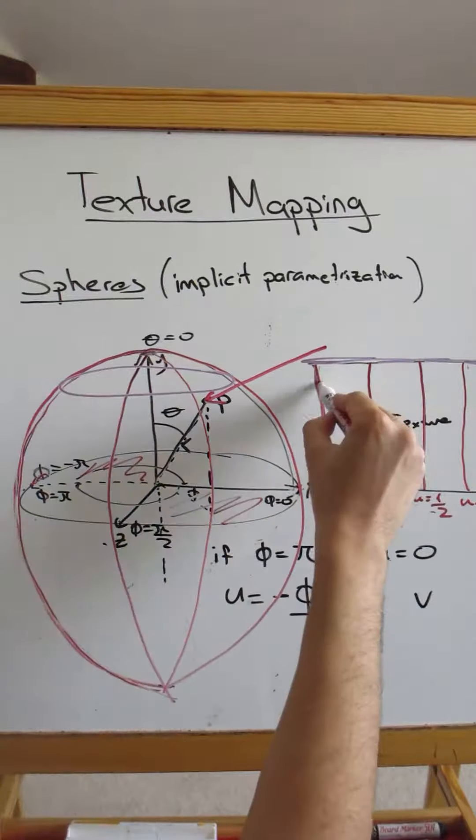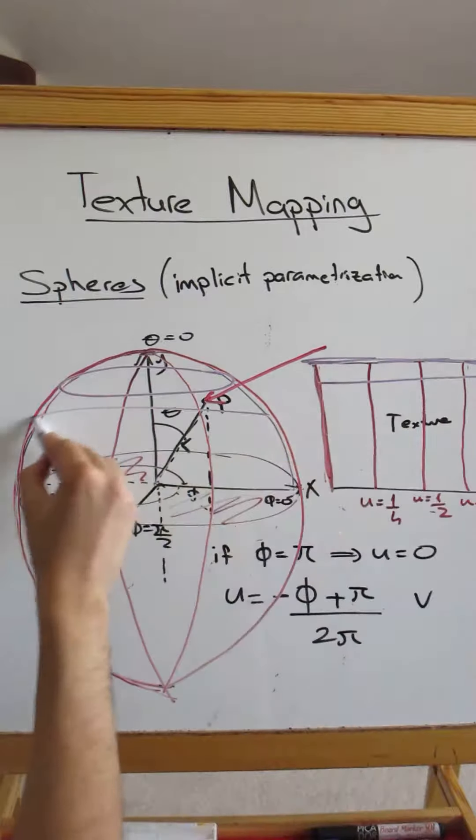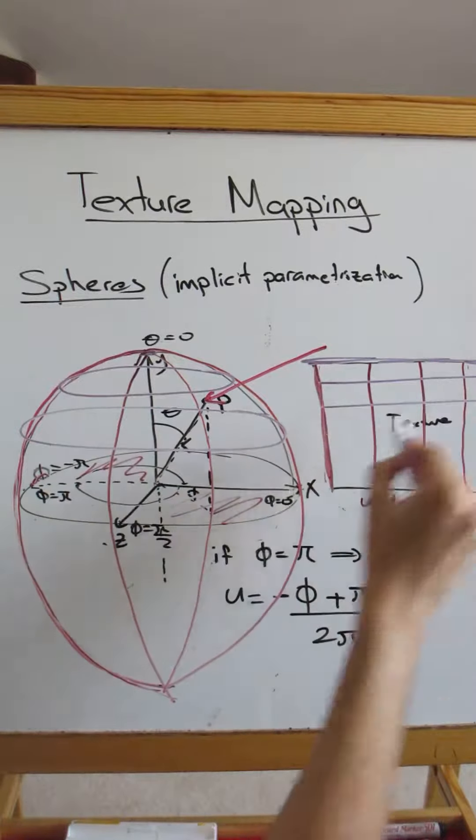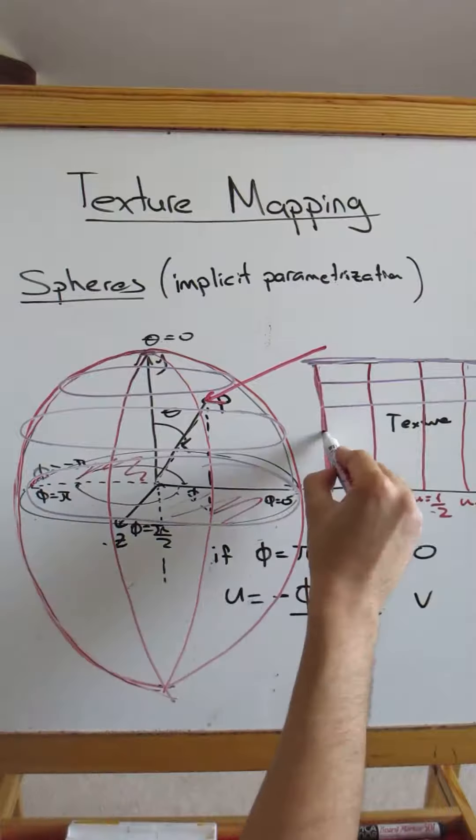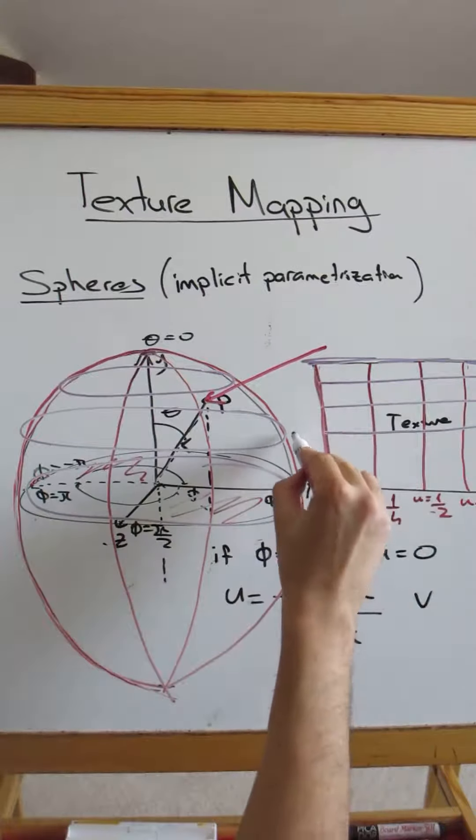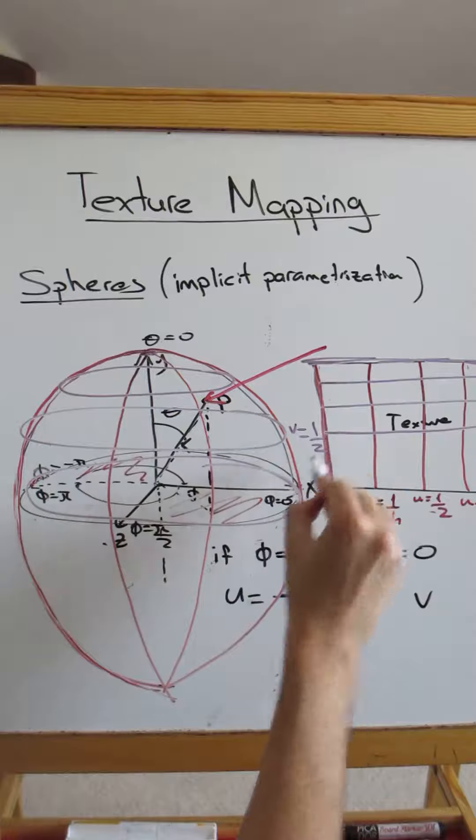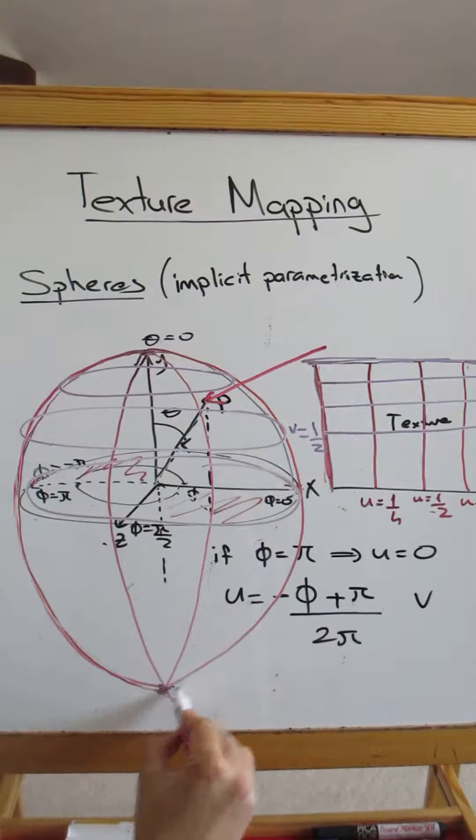of the sphere, you want to get data from here. As you go down, you want to get data from here. So for the equator, you want to get data from the exact center, so here V is going to be 1 over 2. And when you reach the south pole, you want to get data from here.